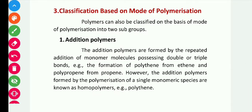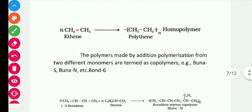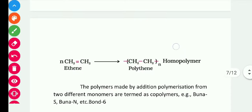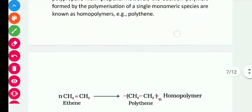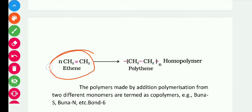The formation of polyethylene from ethene and polypropene from propene are examples of addition polymers. Addition polymers formed by polymerization of a single monomer species are known as homopolymers. A homopolymer contains only one single monomeric species. For example, ethene is a single monomeric species giving rise to polyethene, so this is called a homopolymer.